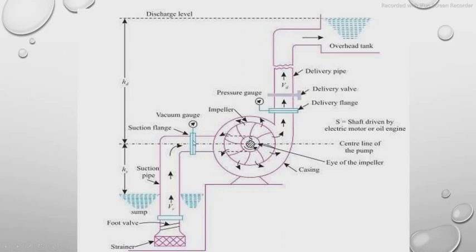The suction pipe is also visible here. We can see there is a foot valve and a strainer at the lower end — we will discuss their uses shortly. Here we can also see the delivery flange, which is a connecting part to extend the outlet pipe, and here is the outlet of the pump.